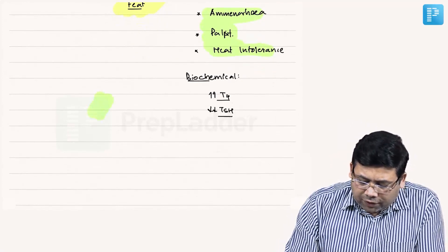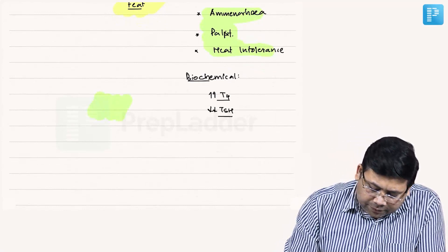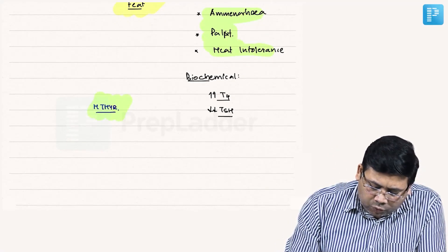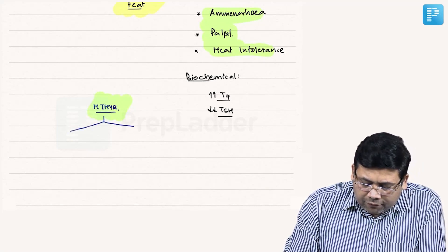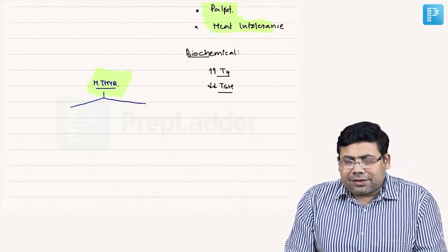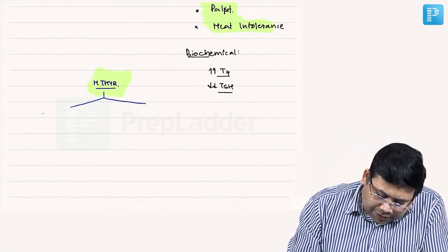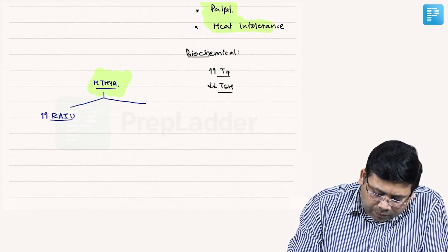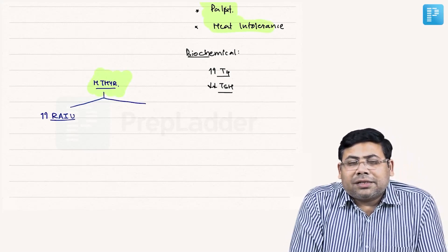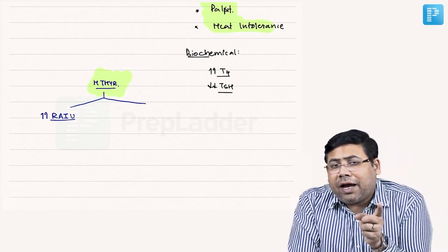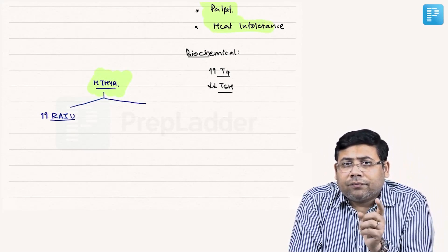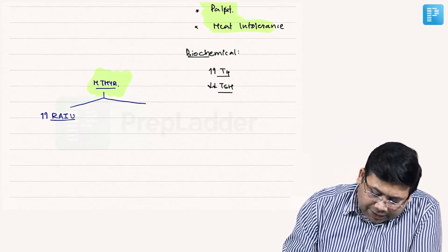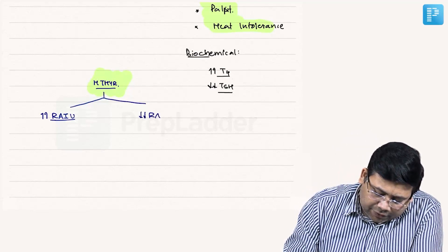What are the causes of hyperthyroidism? There are two important categories. One is where the gland itself is producing excess hormones — that is the case where there is increased radioactive iodine uptake, because if the gland is functionally active it will accept more and more radioactive iodine. The other category is where there is decreased radioactive iodine uptake.